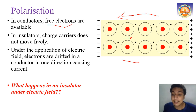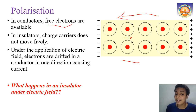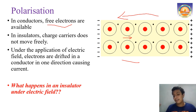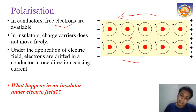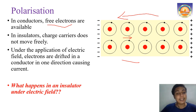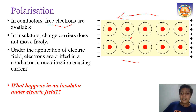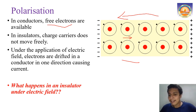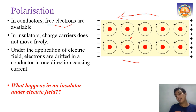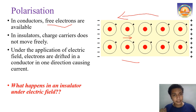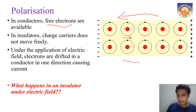In an insulator, electrons are not readily available to move — they are bound to the nucleus and cannot move freely. That is the peculiarity of insulators. What happens when we apply an electric field to an insulator is what we are going to discuss in polarization.